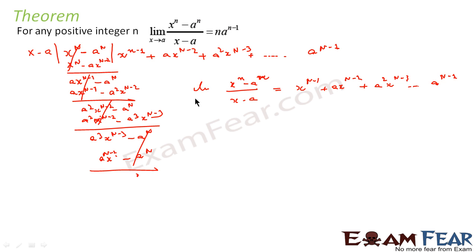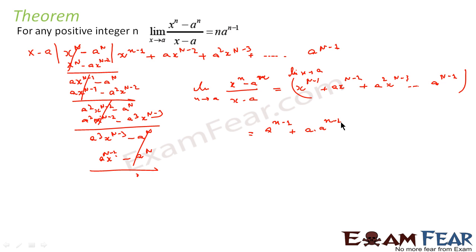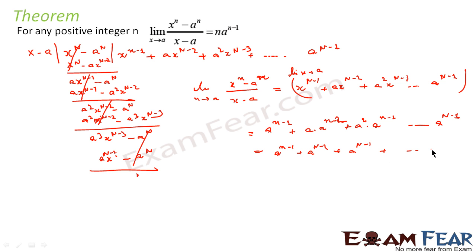Now we have to find the limit as x tends to a. So here we will put the limit as x tends to a on the right-hand side as well. Putting x equal to a, this becomes a^(n-1) plus a times x^(n-2), which becomes a^(n-2), so that term becomes a^(n-1). Plus a² times x^(n-3) becomes a^(n-3), giving a^(n-1). What we get here is a^(n-1) + a^(n-1) + a^(n-1), and these are n terms.